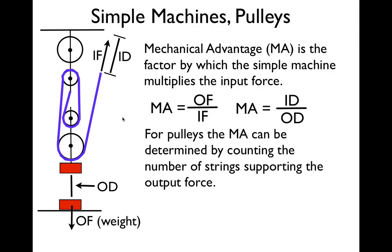All we do is count the number of strings — and this is what I mean by that. We have our pulley system over here. We want to figure out what the MA is. We just look across the middle between the two pulleys and count how many strings are supporting. This string supports the weight, this string supports the weight, this string supports the weight, and this string supports the weight. So you look across, you count, and in this case the mechanical advantage of this pulley system is four. This pulley system is going to multiply the input force by four. So, for example, if we pull the string with 20 newtons — the input force — we're going to be able to lift an object with a weight of 80 newtons. Just count the number of strings.